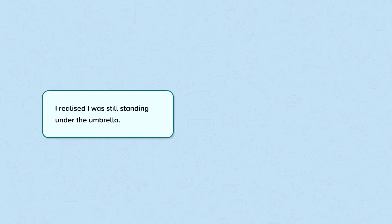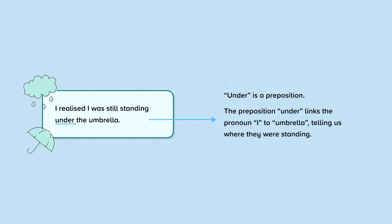In this next example, I realised I was still standing under the umbrella. Under is a preposition. The preposition under links the pronoun I to umbrella, telling us where they were standing.